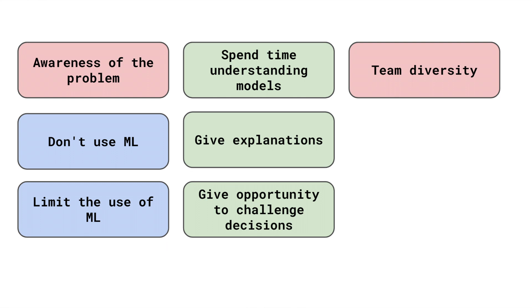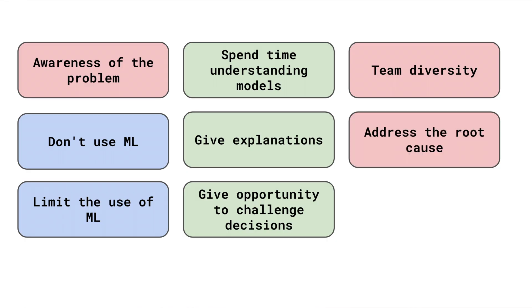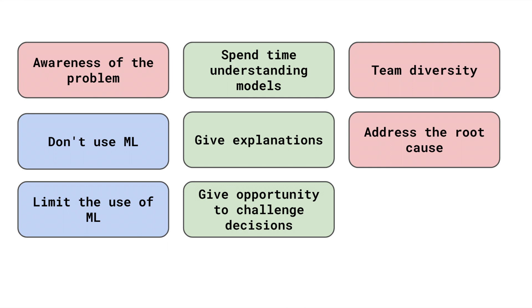It is also important to consider who is building the models. Having a diverse team will bring a diverse set of lived experiences to the table. They will all have an understanding of how the system will impact their own lives, making it easier to identify potential fairness issues before the model is deployed. Unfairness in models or data is a reflection of unfairness in reality. If we address the true underlying issues, we can also solve the problem within our data, which will require a shift in company or government policy.